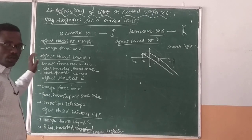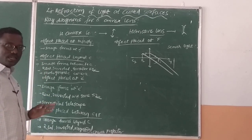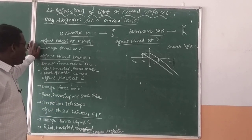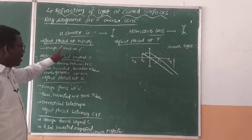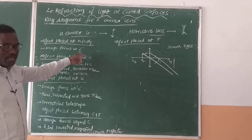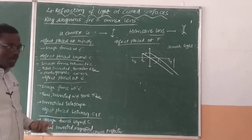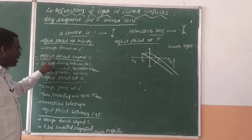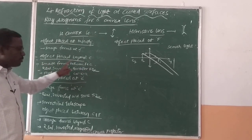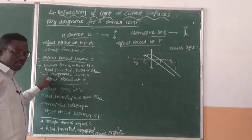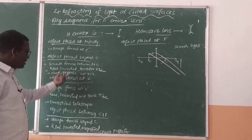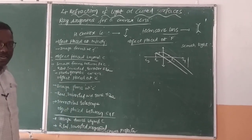In the last class, we discussed about the ray diagrams for the convex lens. We discussed that when an object is placed at infinity, the image forms at the focus. The nature of the image is real, inverted, and smaller in size. This type of image is formed in a photographic camera.